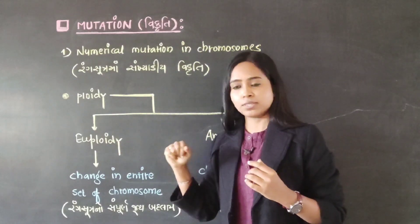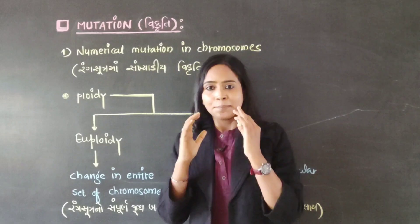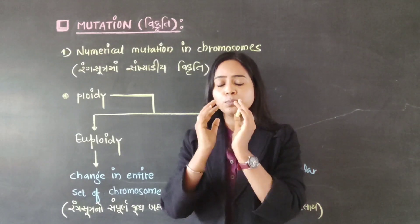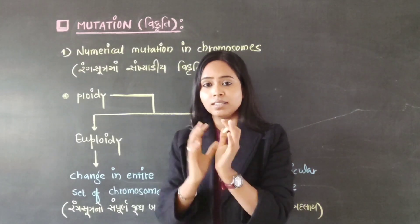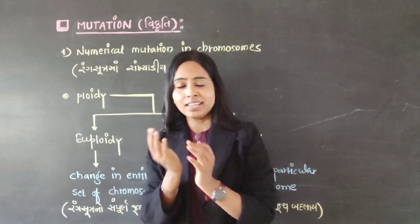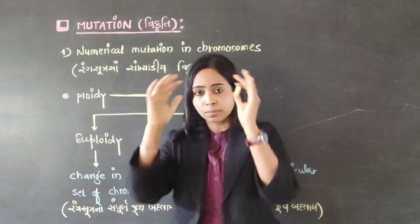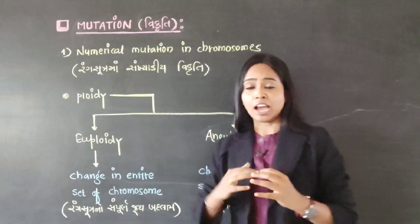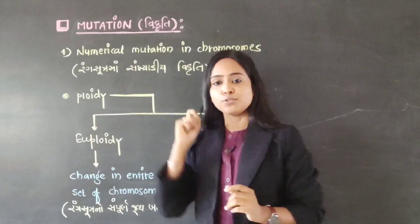Ploidy is of two types. Number one is Euploidy and the second is Aneuploidy. Let's try to understand what Euploidy is. In any organism, consider a set of chromosomes with any number you can imagine. If the entire set of chromosomes gets altered — the whole set repeats and gets bigger — then we will call it Euploidy. Whether it is half, double, or triple, the whole set number is Euploidy.